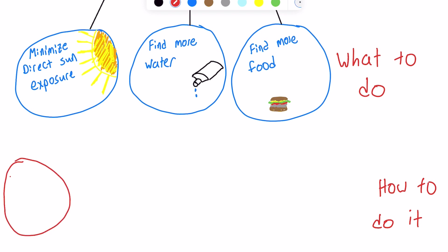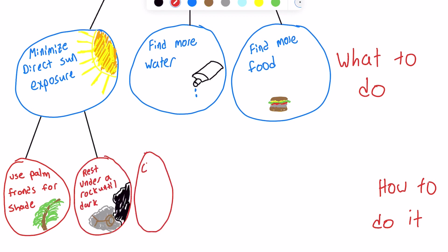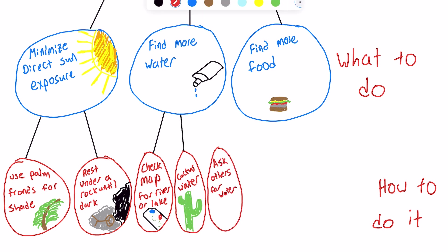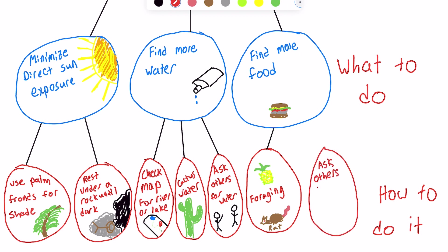To minimize direct sun exposure, we could use palm fronds for shade, or rest in the shade of a rock until the sun goes down. To find more water, we could consult a map to find a river or lake, extract water from a cactus, or ask other hikers to share some of their water. To find more food, we could forage for edible plants, attempt to trap and eat an animal like a rat, snake, or bird, or ask hikers to share their food.